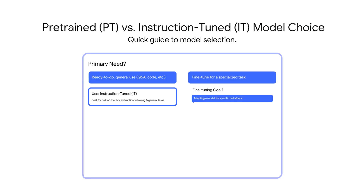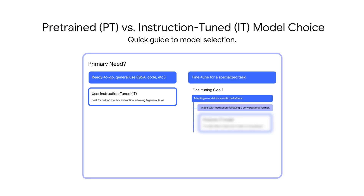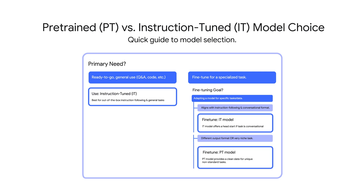What if you want to use fine-tuning and you want a model that's specialized for a specific task? If your task aligns well with general instruction following, like creating a specialized Q&A bot, and you're happy using Gemma's existing conversational format, fine-tuning the IT model often gives you a performance head start. It's already learned a lot about being helpful. However, if you need a completely different output format that doesn't resemble a conversation, or if your task is very niche and far removed from typical interactions, then starting with the pre-trained model could be a better choice.